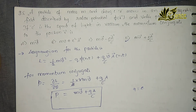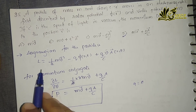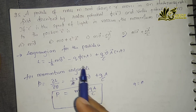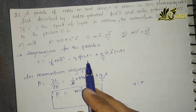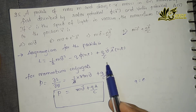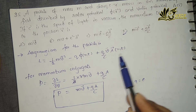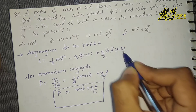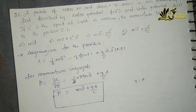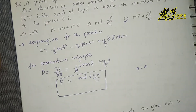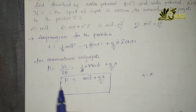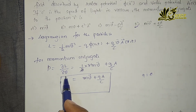The Lagrangian of a particle in an electromagnetic field is given by: L = (1/2)mv² − qφ(r,t) + (q/c) v·A(r,t), which is a function of r and t. For finding the conjugate momentum, what you have to do is partially differentiate the Lagrangian with respect to velocity.